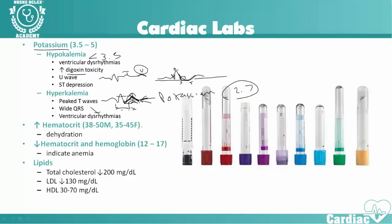Another lab to look at is hematocrit — basically the percent of red blood cells in the blood. It's different for males and females, but as that number goes up, as our percent of red blood cells goes up, that's indicative of dehydration. Only a portion of our blood is red blood cells — about 30 to 50%. If our hematocrit goes up to like 60, that means there's less of the other fluids, showing we're dehydrated. On the other end, if hematocrit and hemoglobin go down, that could be indicative of anemia. Another lab to look at for cardiac patients is lipids — total cholesterol should be under 200 mg/dL. LDLs, the bad cholesterol, should be under 130. HDLs, the good cholesterol, which are high-density lipoproteins, should be between 30 and 70.